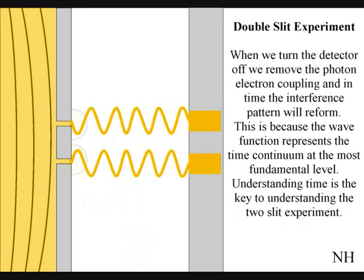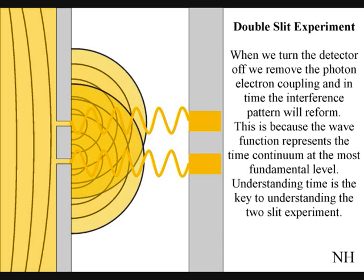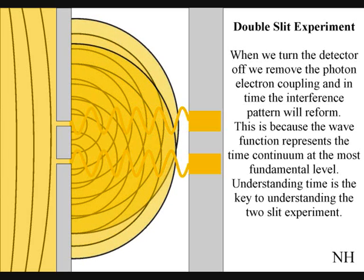If we turn the detector off, we remove the photon-electron coupling, and in time, the interference pattern will reform. Just like in Newton's first law of motion, the interference pattern will continue to maintain its state unless acted upon by an external force.